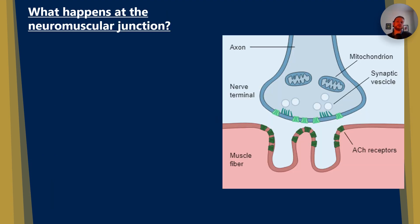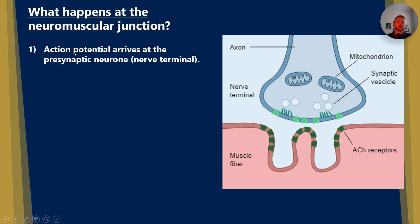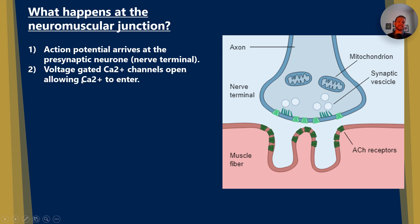What happens at the neuromuscular junction? We have the presynaptic neuron, which has mitochondria within it and synaptic vesicles. We call this the nerve terminal because it's where the nerve terminates. The action potential will arrive at the presynaptic neuron, and voltage-gated calcium channels open, allowing calcium ions to enter.